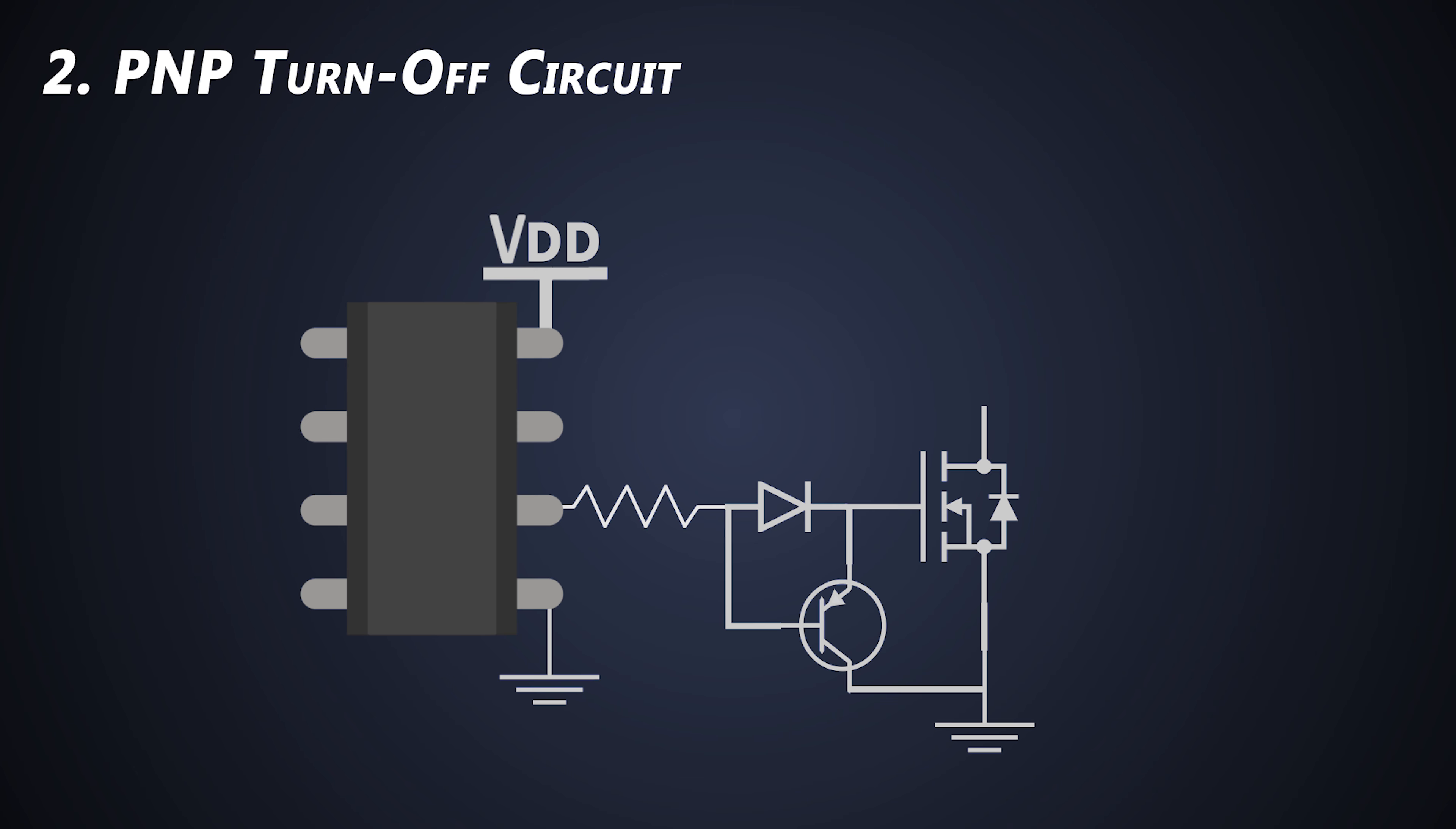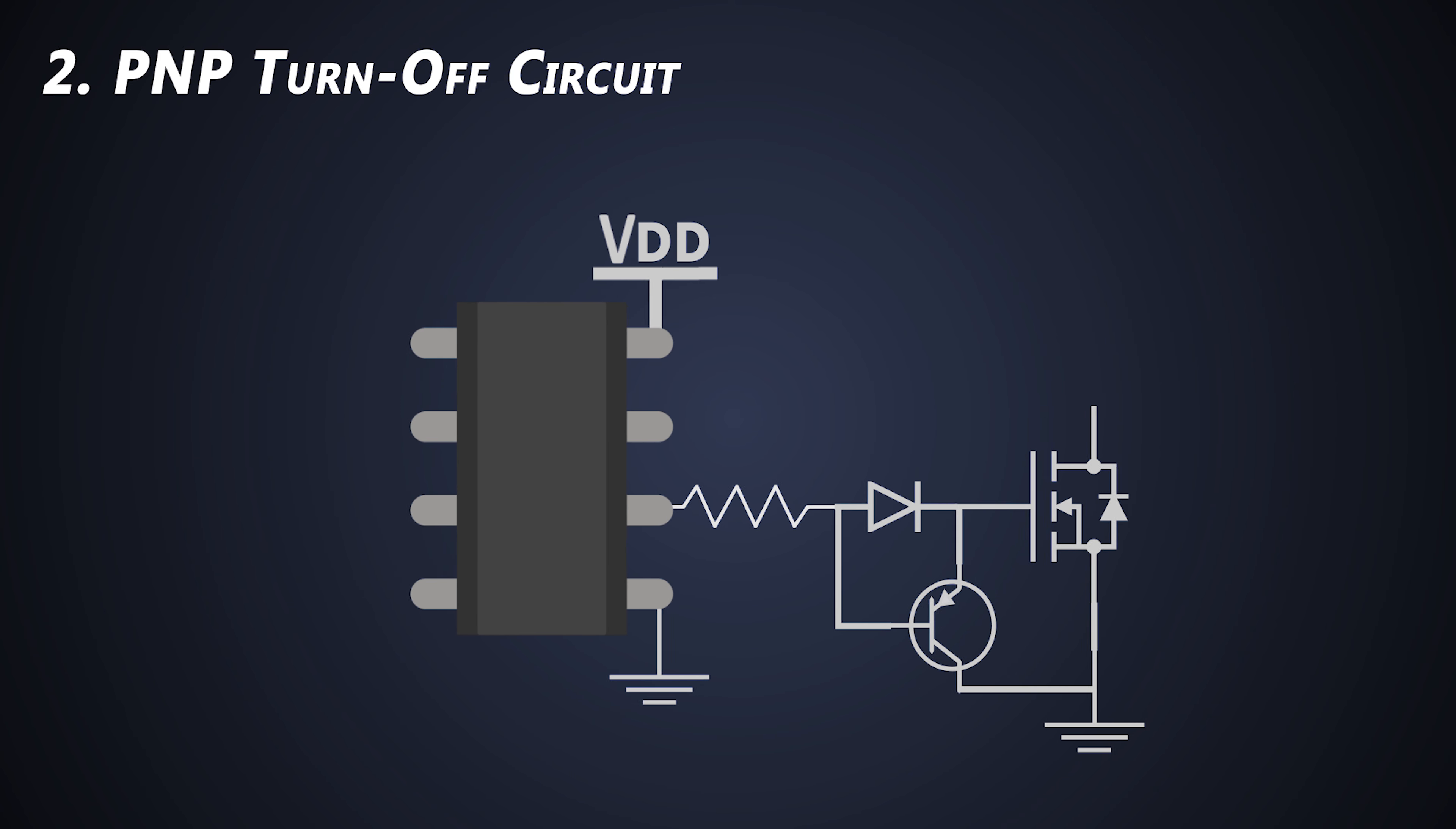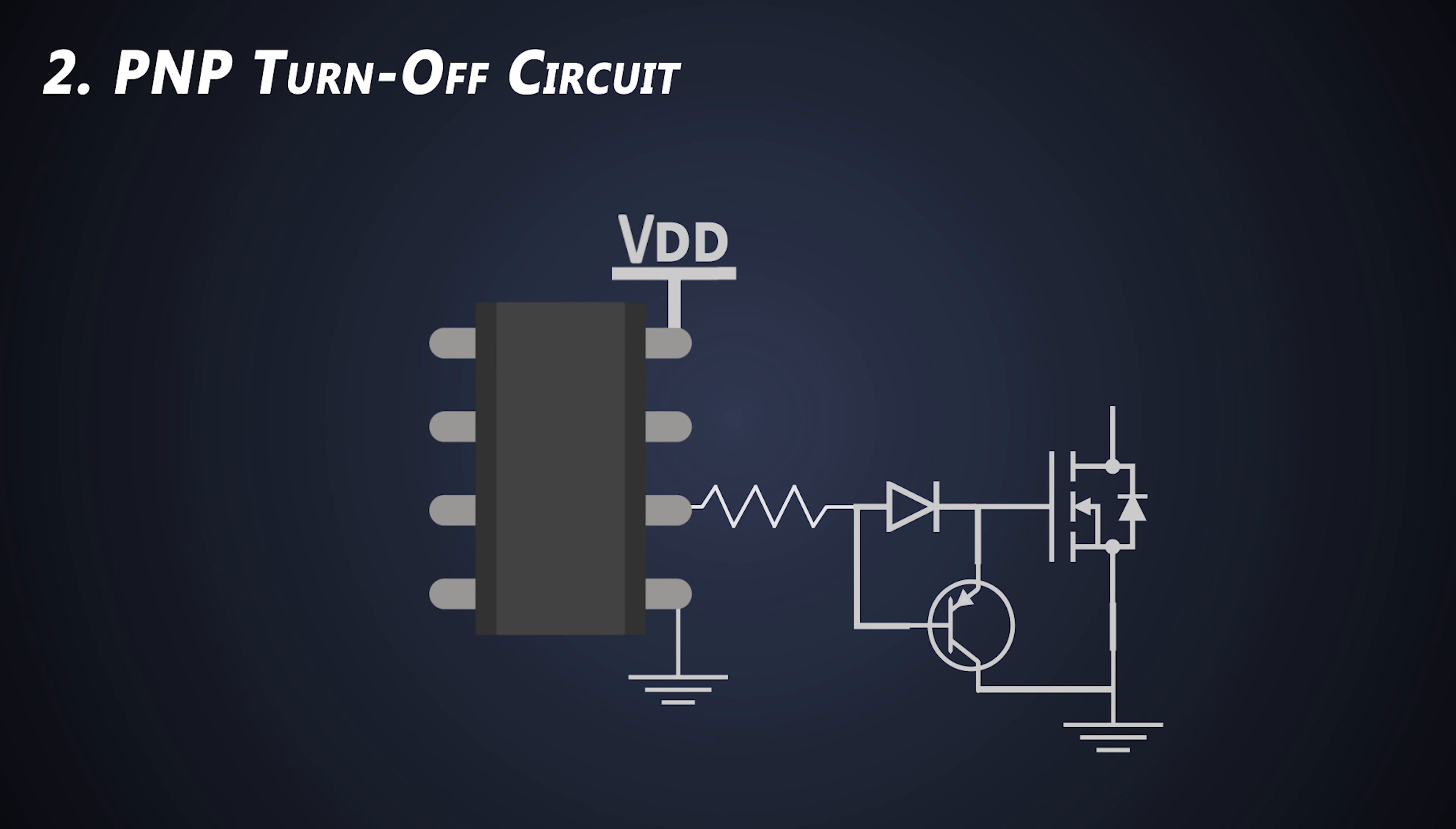Now, the next is PNP turn off circuit. This is the most popular arrangement for turn off speed enhancement. The construction of the circuit would be like this. The circuit works as intended during the turn on process. The current flows from the gate resistor and this diode. During the turn off process, this gate driver provides a low signal at the output. Due to that, this PNP BJT turns on and the gate and source get shorted locally at the MOSFET terminals, which discharges the charged input capacitor of the MOSFET.